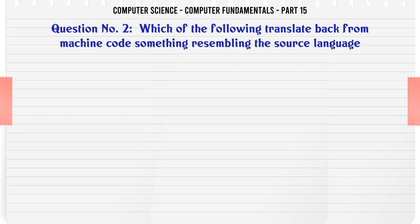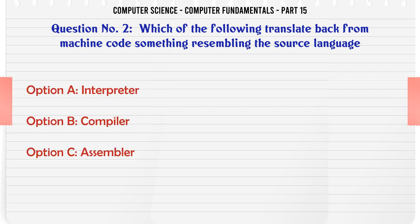Which of the following translate back from machine code something resembling the source language? A. Interpreter. B. Compiler. C. Assembler. D. Decompiler. The correct answer is D. Compiler.